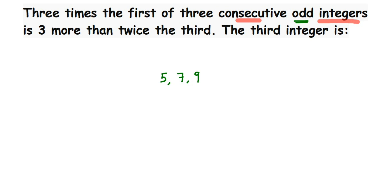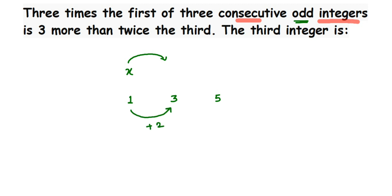In this question we don't know the integers — they've just said three consecutive odd integers. Whenever something is unknown we assume a variable. Let the first odd integer be x. To find the next one, let me use the example 1, 3, 5. To go from 1 to 3, I add 2. So to find the next consecutive odd integer, I add 2 to the previous number.